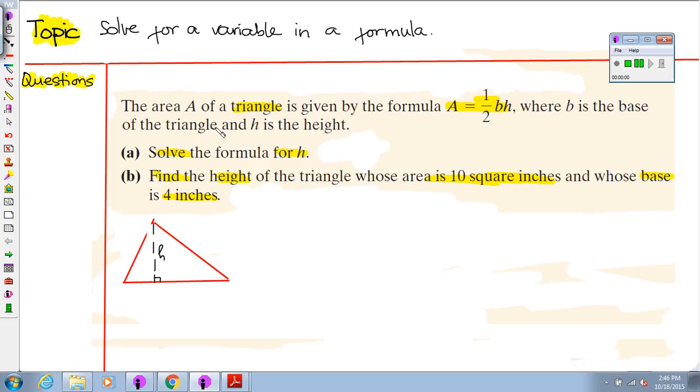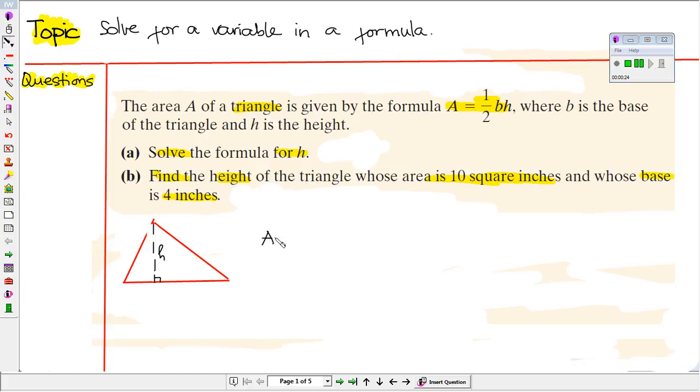Let's begin with this problem. The area of a triangle is given by the formula: the area is one-half times the base times the height. So this is the base, this is the height.